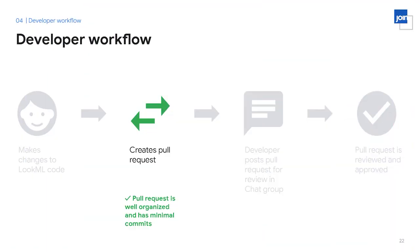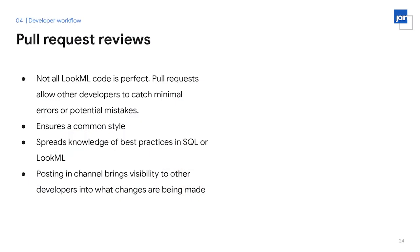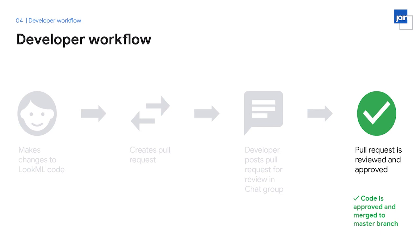Once the developer ensures their code meets the developer guidelines, they can open a pull request using their Git provider. The user posts a link with the pull request, the purpose, the complexity, and the time estimate for review so other developers can review. We have an internal chat channel that includes all ambassadors and the centralized data team. Pull requests give developers the opportunity to review each other's code and learn from one another — another set of eyes helps catch errors and potential mistakes, ensures a common style, and spreads knowledge of best practices in SQL or LookML. Once another developer approves a pull request, the code is merged to the master branch.